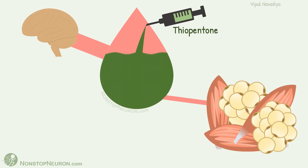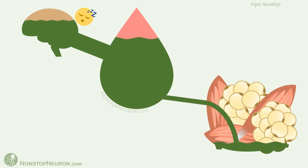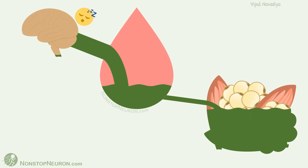The injection first increases the concentration in blood. From here, it enters the brain very rapidly due to high blood supply. This results in rapid induction of general anesthesia. At the same time, it also starts entering fat and muscles. Because of this, the concentration of thiopentone in blood falls, and it doesn't take very long for the concentration to drop to a level where the drug starts diffusing back from the brain.